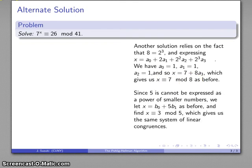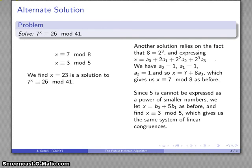5 can't be expressed as a product of smaller numbers, so I'm just going to end up with the same two congruences I had before, and unsurprisingly, I'm going to end up with exactly the same solution.